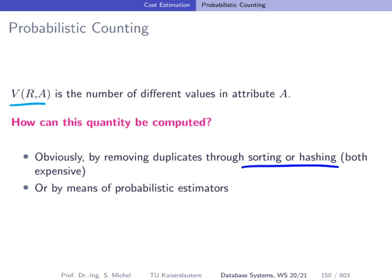The alternative is to use probabilistic estimators. As a mechanism, we go over the table once, and instead of sorting and hashing, we record the different occurrences, and in the end the estimator will tell us the estimated number of distinct values of attribute A. I'd like to introduce the first estimator — the so-called Flajolet-Martin sketch — by illustrating it on an empty slide.